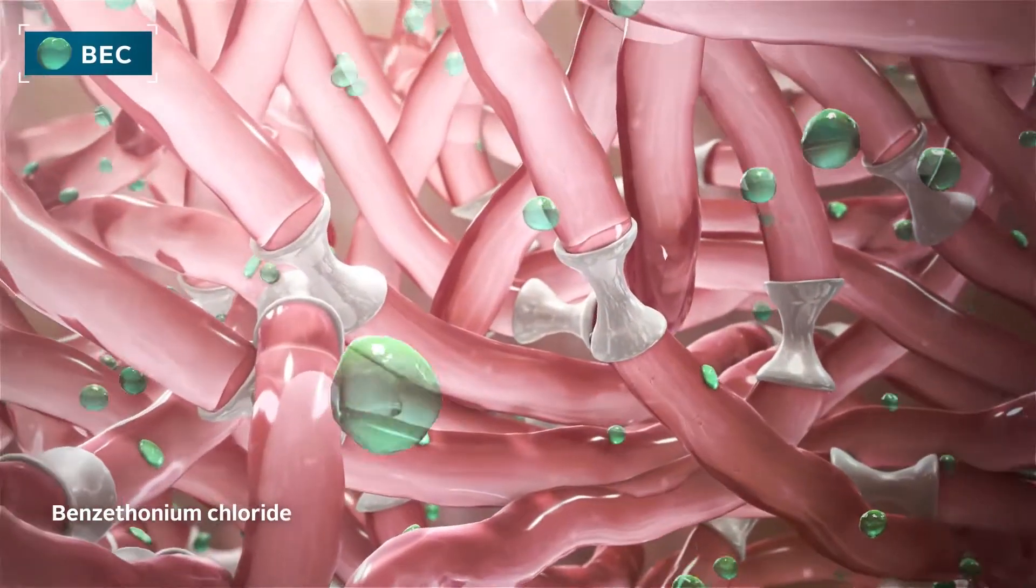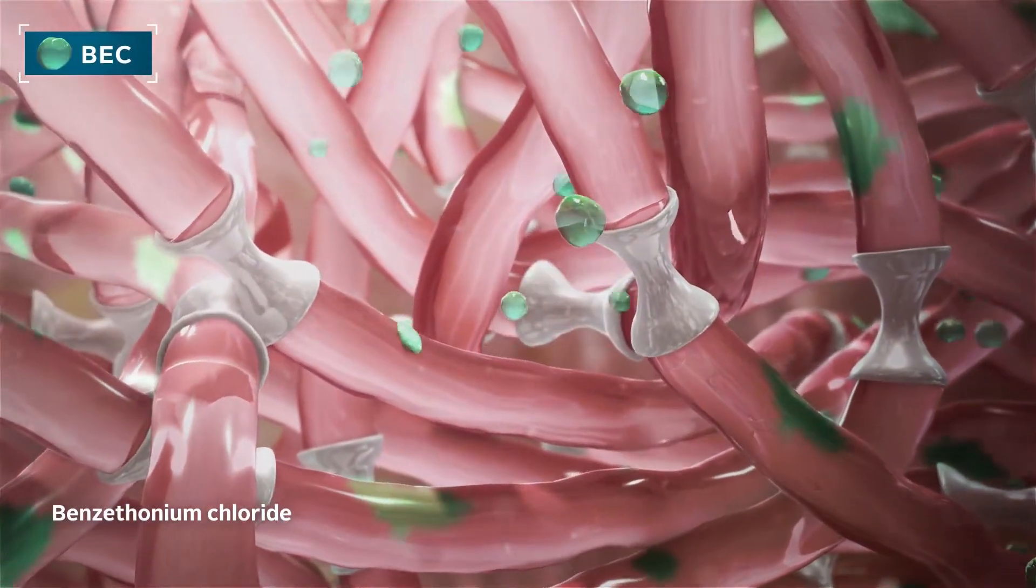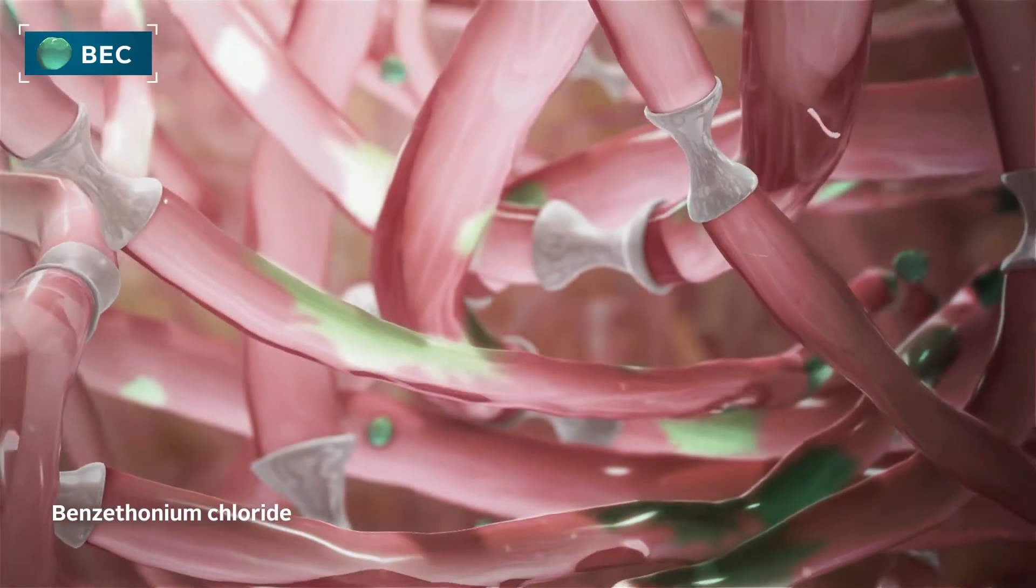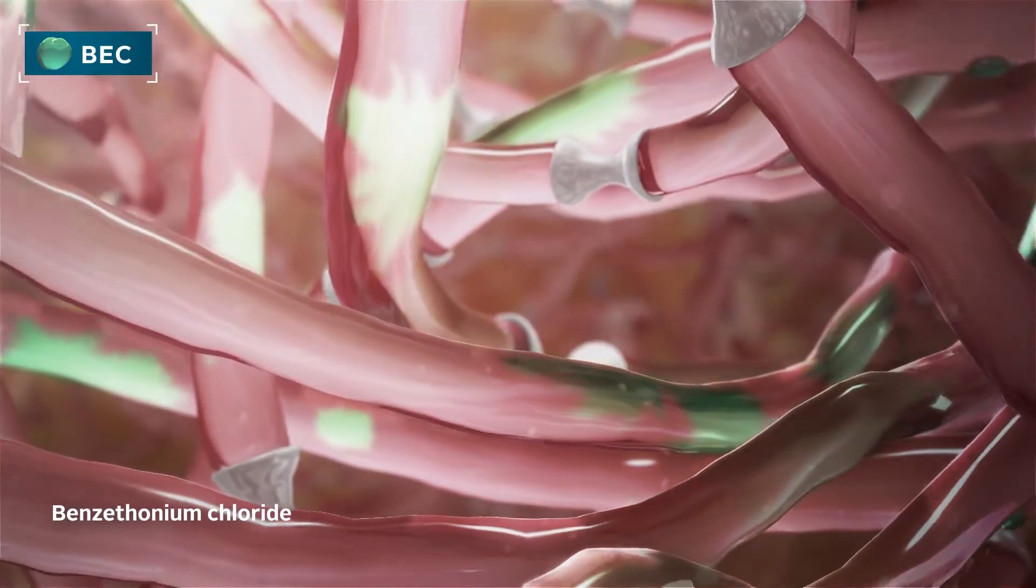BEC is a surfactant that reduces surface tension within biofilm. This action helps the anti-biofilm agents to reach their target faster and more efficiently.